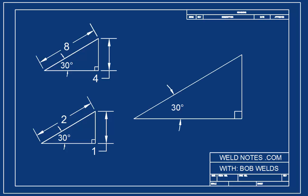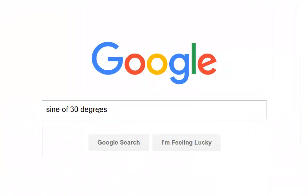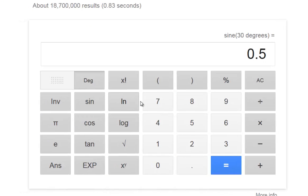Any 30 degree right triangle has a hypotenuse that is exactly twice as long as the opposite side. Here, you can Google it. Type sine of 30 degrees and see what you get. Be sure to type degrees or you'll get something else.